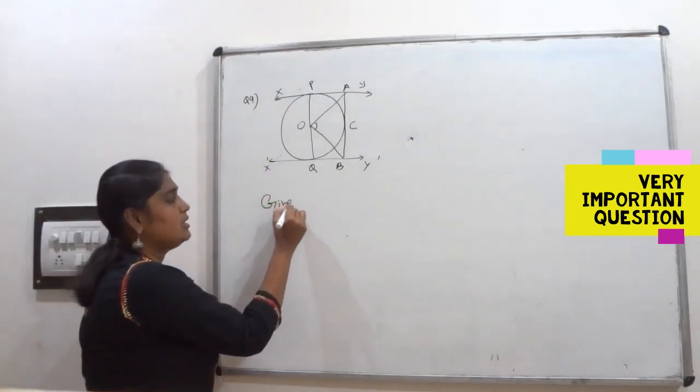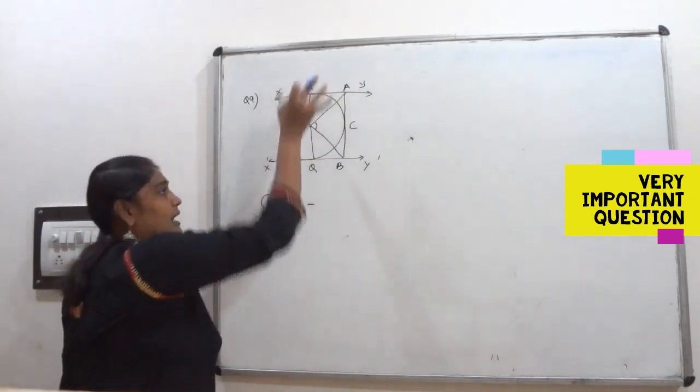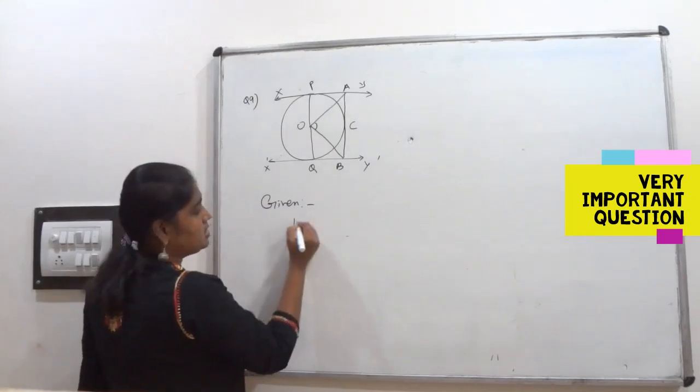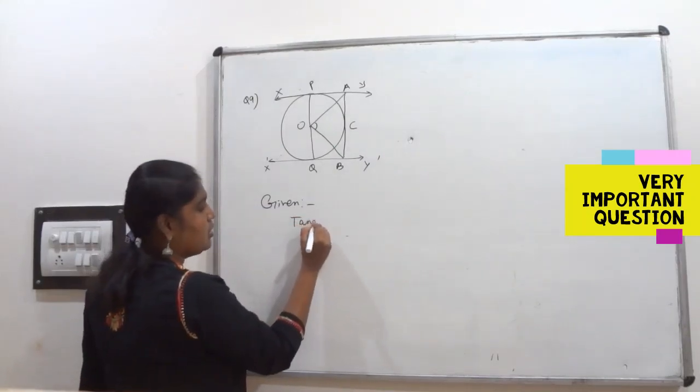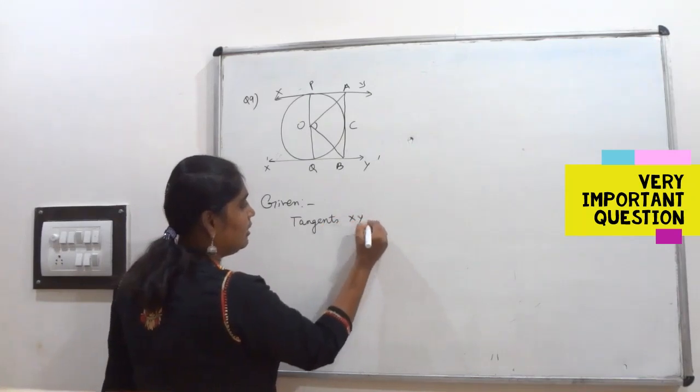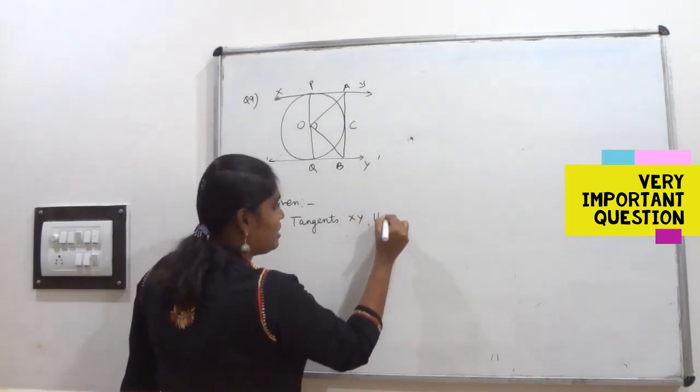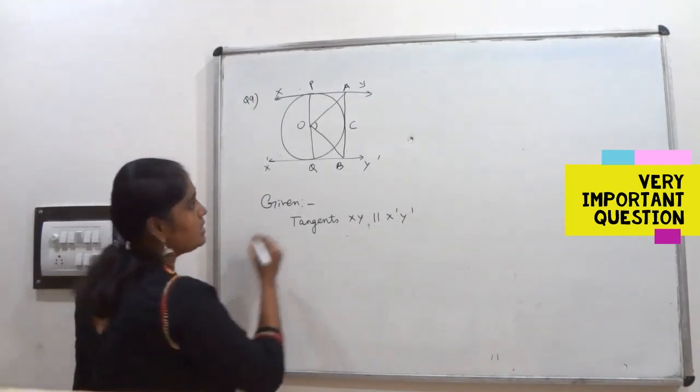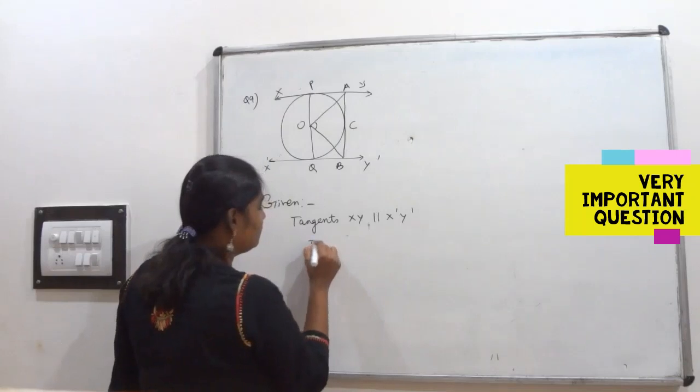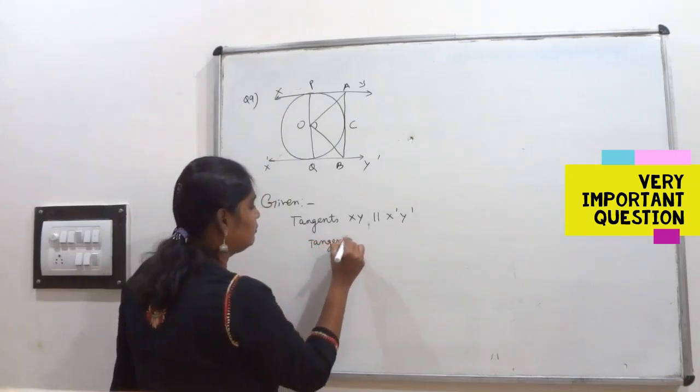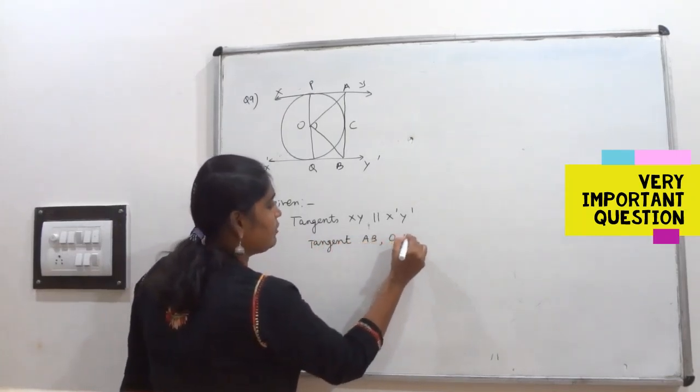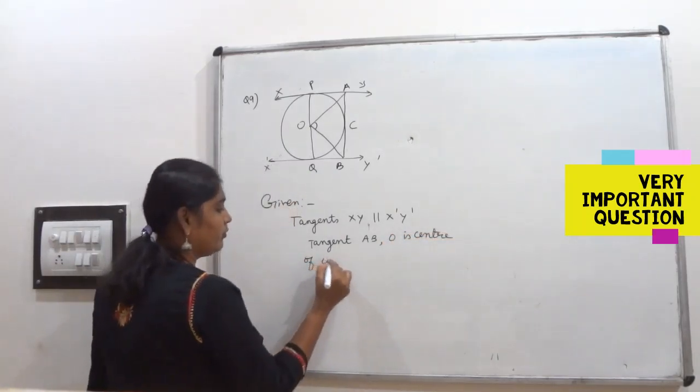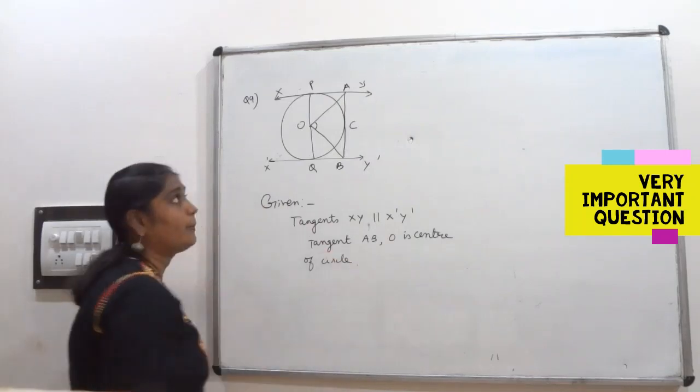Write first of all what is given here. Two tangents XY and X'Y' are parallel, so write tangents XY is parallel to X'Y'. This is given to you. One more tangent that is AB. O is center of circle. These are the things given to you.